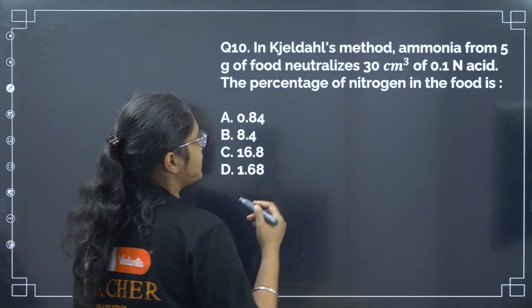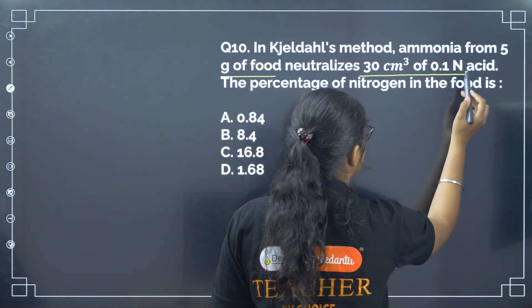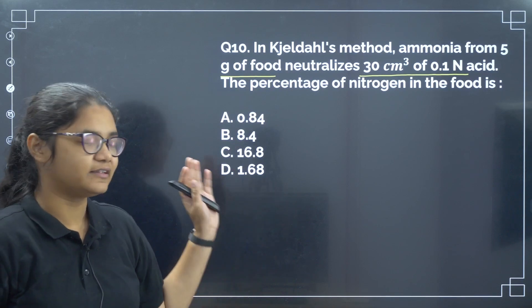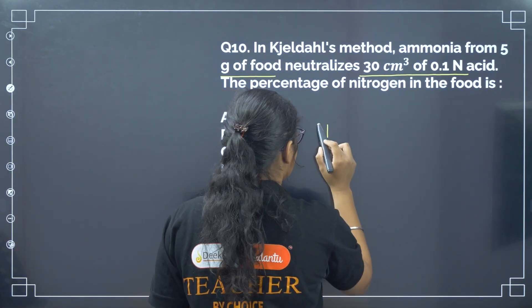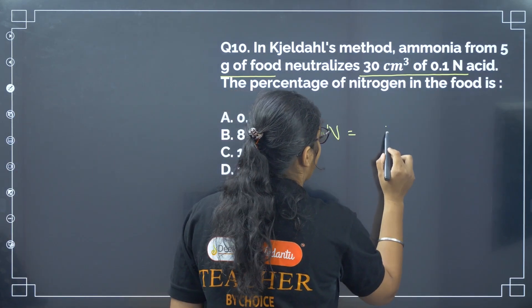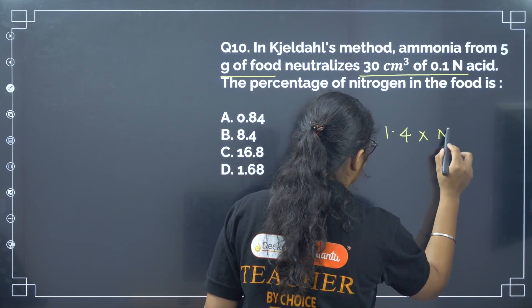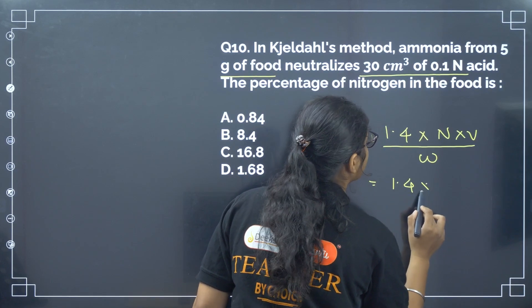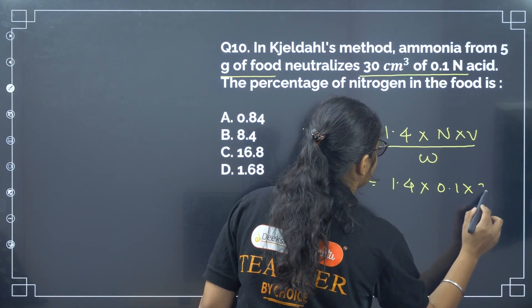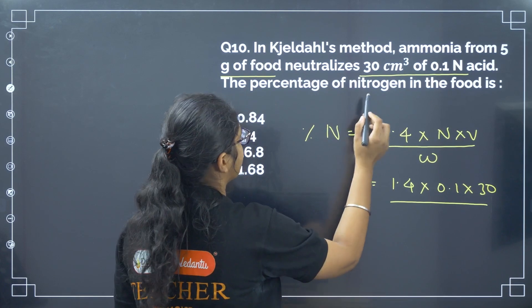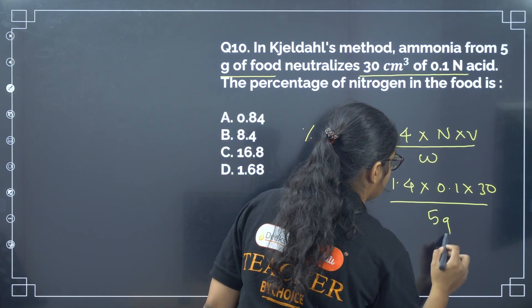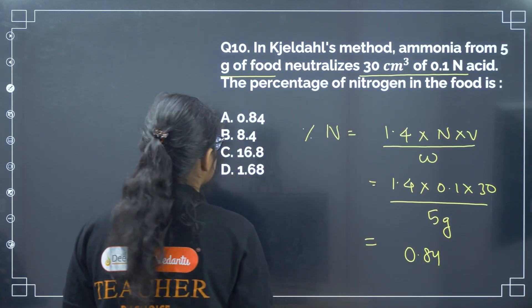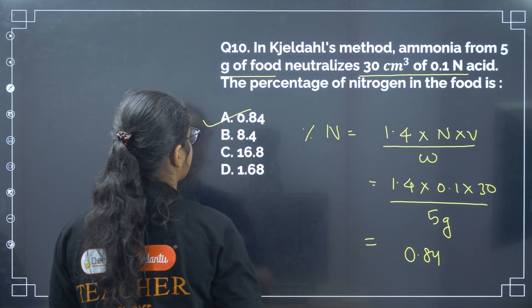Next: in Kjeldahl method, ammonia from 5 gram of food neutralizes 30 cm³ of 0.1 normal acid. The percentage of nitrogen equals 1.4 × normality × volume / W = 1.4 × 0.1 × 30 / 5, giving approximately 0.84. Correct answer is option number A.